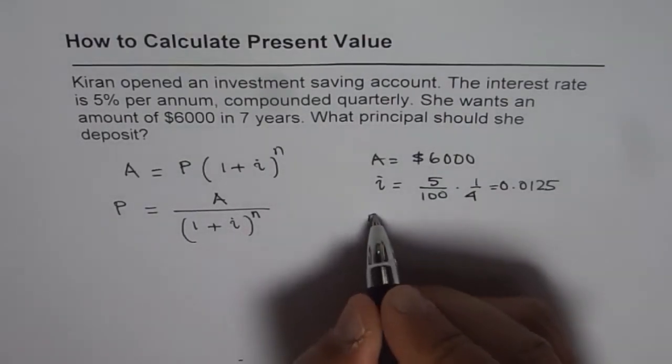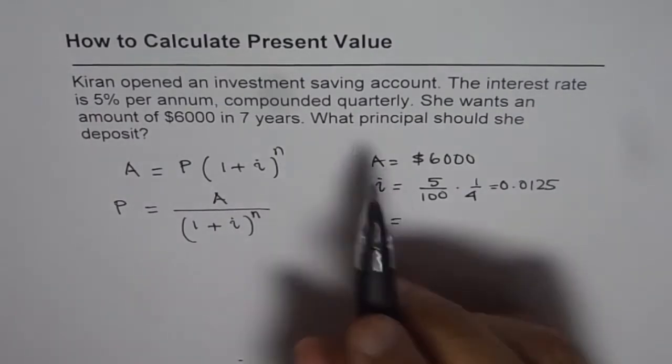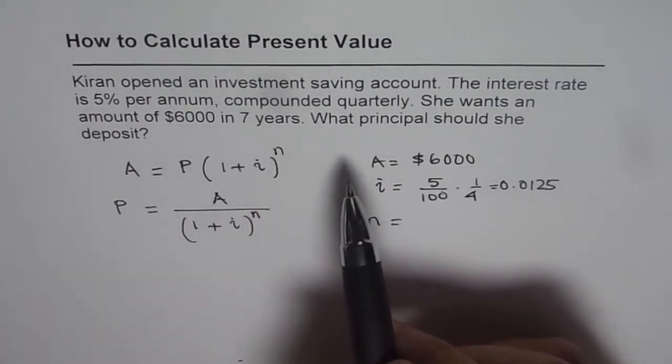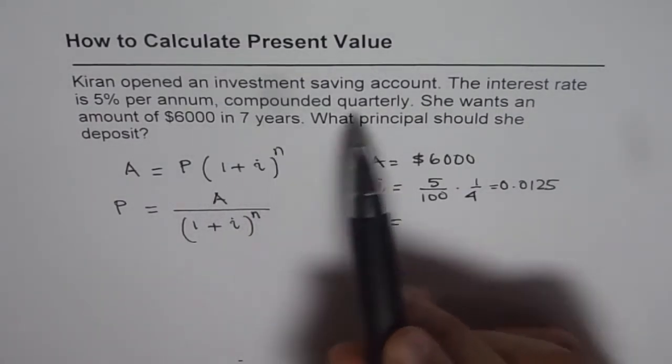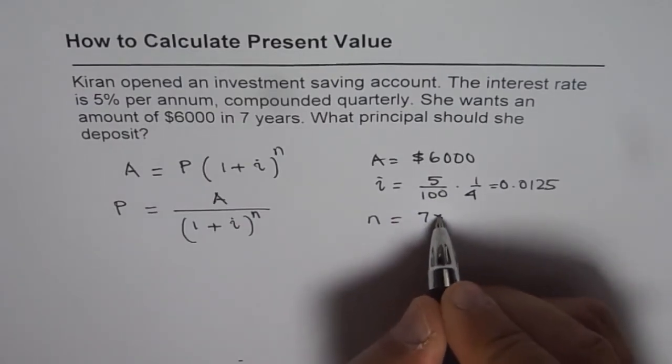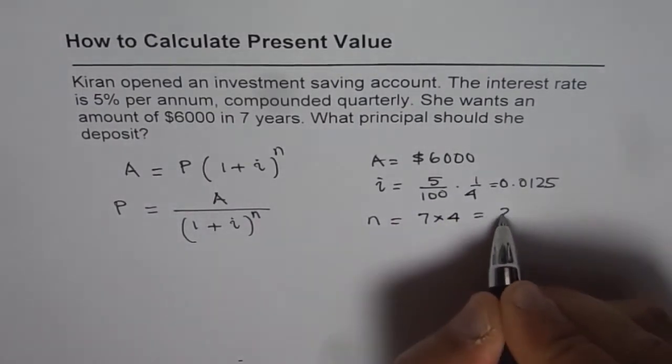Now let's find the compounding periods, which is n. So in 7 years, since the interest will be paid 4 times a year, it will be 7 times 4. So that gives us 28.